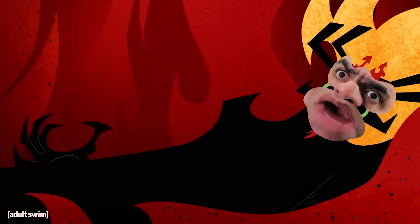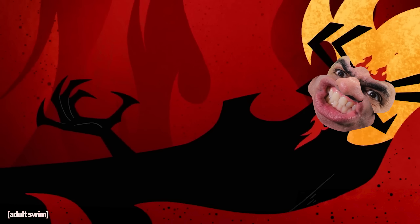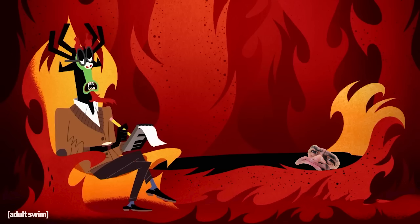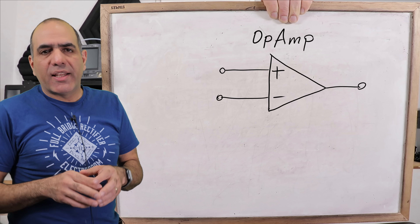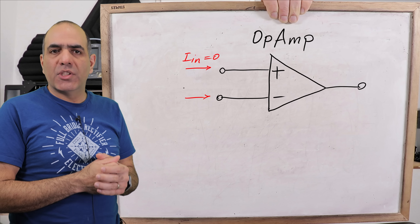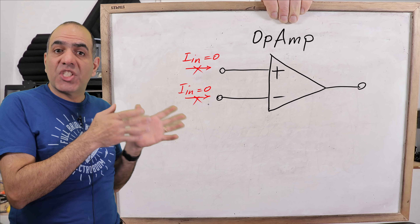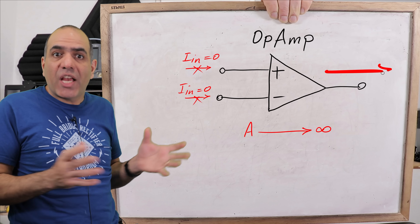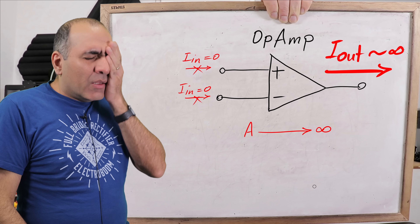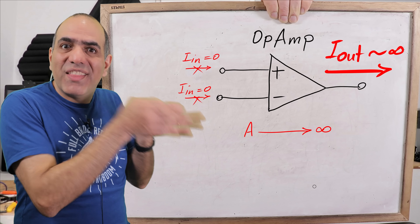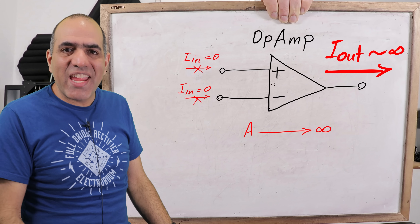So tell me what's been bothering you. See, proper engineering is done with so much neglect, otherwise we go crazy. So basically an ideal op-amp is like an open circuit at its input, so it never draws current from the circuit it connects to. It has an infinite gain, and you can draw as much current as you want from its output.